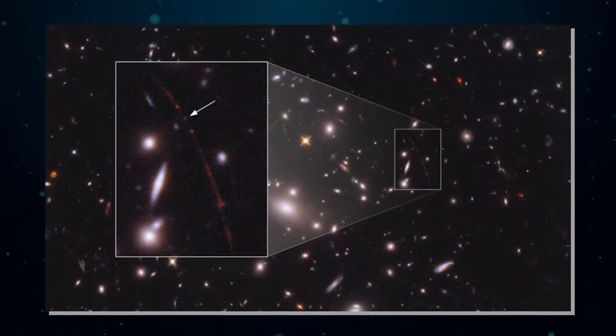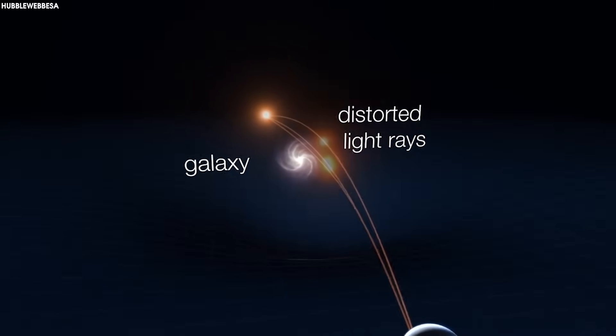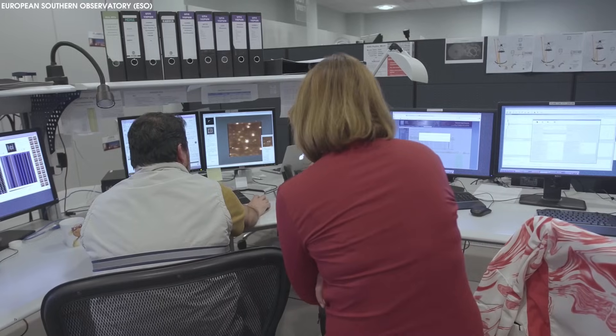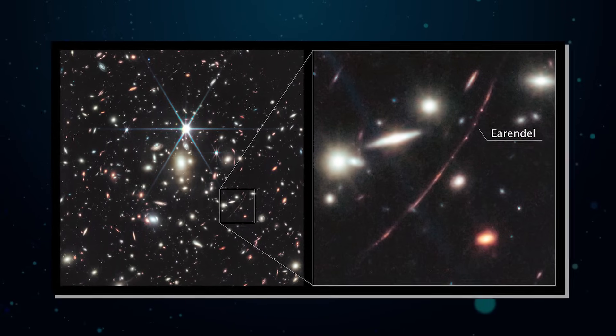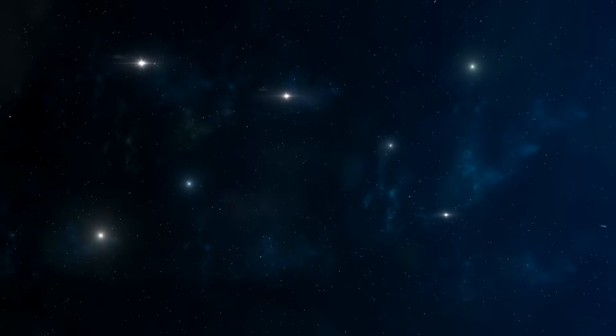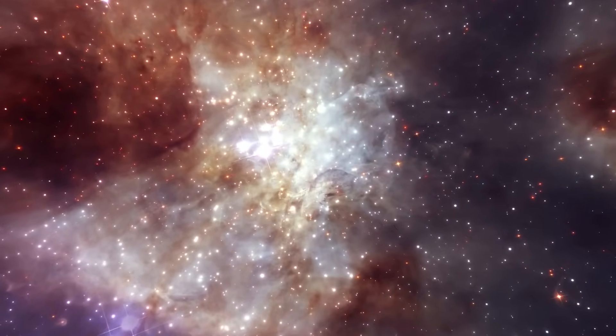Earendel lies within the Cetus constellation. It was discovered using the Hubble Space Telescope through gravitational lensing. This discovery was reported on March 20th of 2022. Hubble was able to detect Earendel because the star's light was magnified by the massive galaxy cluster WHL0137-08,